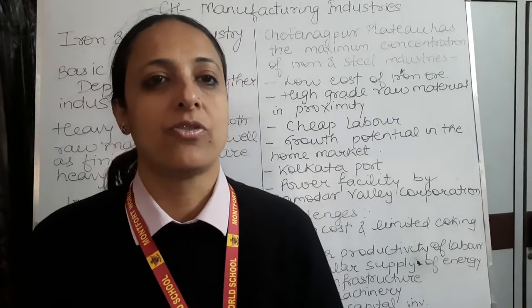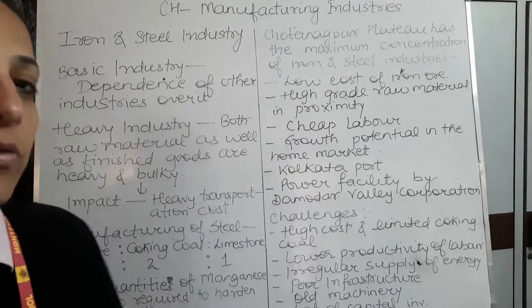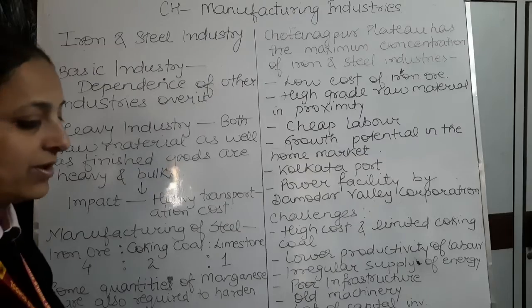Good morning students. We were discussing the chapter manufacturing industries. Until now we have covered the agro-based industries — cotton textile, jute textile, and sugar. Today we are going to start with iron and steel industry.